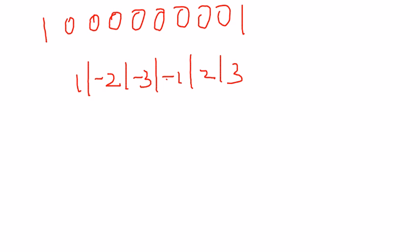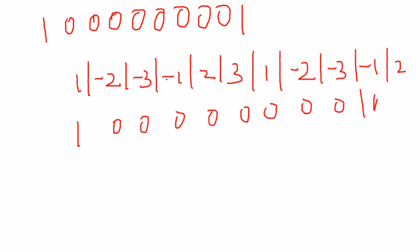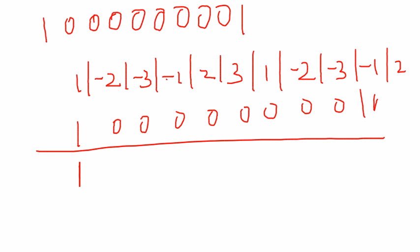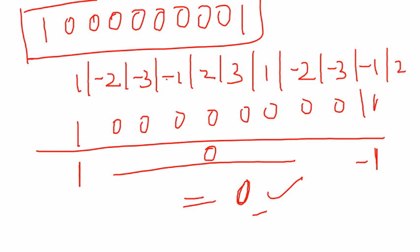Since the number has more digits than the pattern, we simply append the same pattern again, giving us: 1, -2, -3, -1, 2, 3, 1, -2, -3, -1, 2. Now we write the digits of the number below. All the middle digits are zeros, so multiplying gives 0. Only 1 × 1 = 1 and 1 × -1 = -1 are non-zero, and 1 + (-1) = 0. Since 0 is a multiple of 7, this number is perfectly divisible by 7.